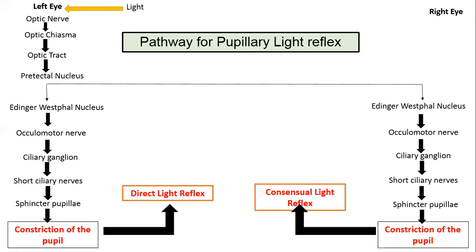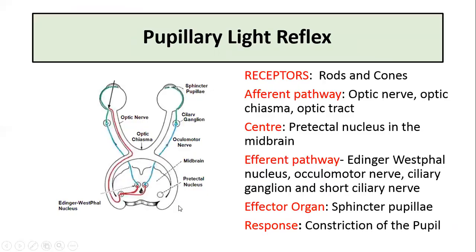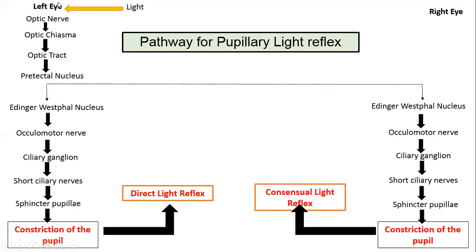This slide shows a flowchart of both the direct and indirect light reflex pathways. In the direct light reflex, the light is shone in the left eye and causes constriction of the pupil in the left eye. In the consensual light reflex, the light is shone in the left eye and constriction of the pupil occurs in the right eye.